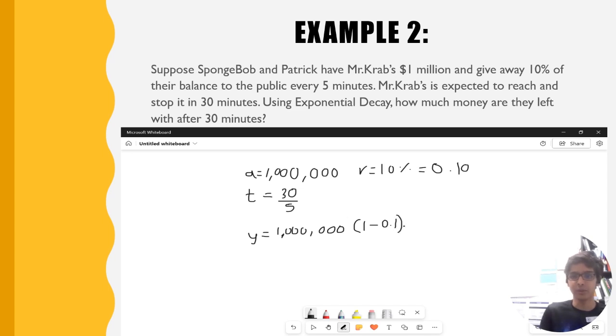it's always going to be 1 minus because it's exponential decay. We want the function to be decreasing, so 1 minus 0.1 tells us it's a decreasing exponential function, to the power of 6. So when putting the value in calculator,